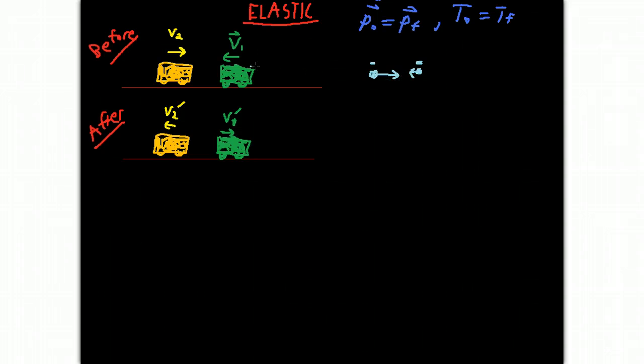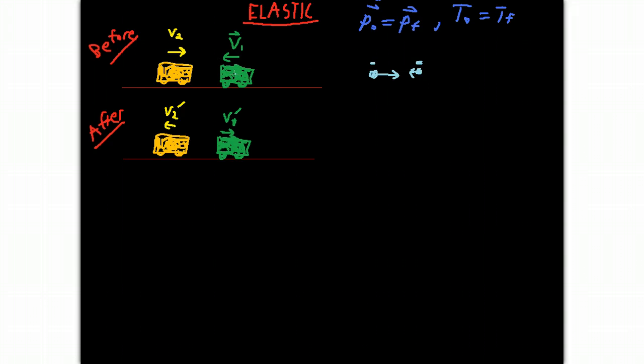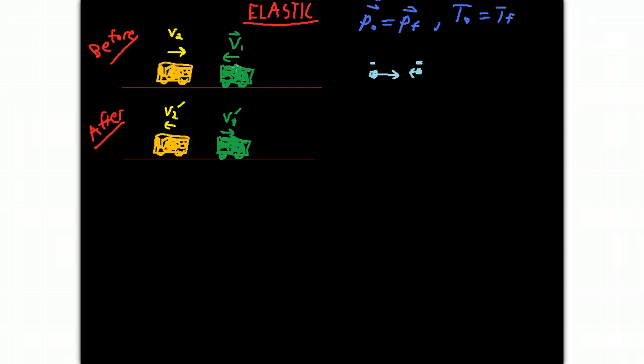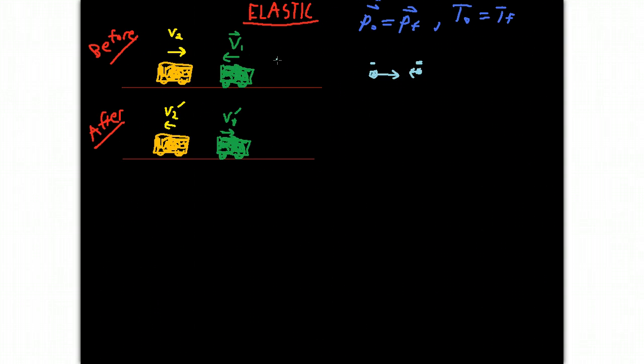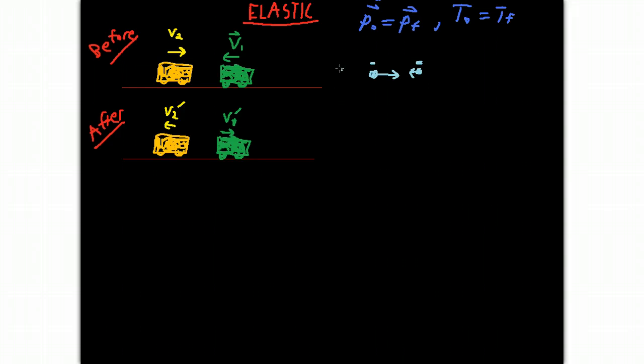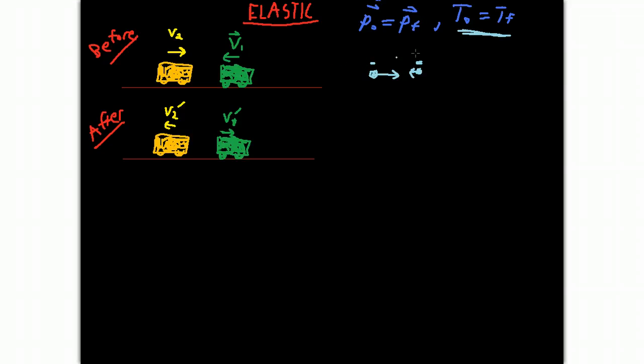But what happens at the macroscopic level, for instance with these two carts, is that energy is given over to the motion of particles inside of each of these objects, or to the motion of the particles outside of these objects. So they would be elastic if we could take into account the motion of every single little particle, but we rarely can do that. So that's why this doesn't usually work out for us at a macroscopic level. We just can't keep track of everything. But what is nice is that this holds true for the two macroscopic objects.